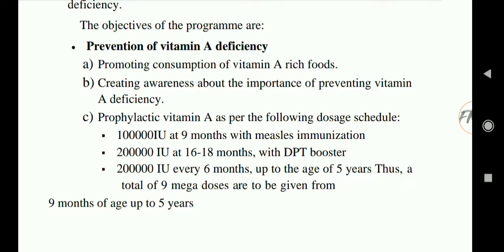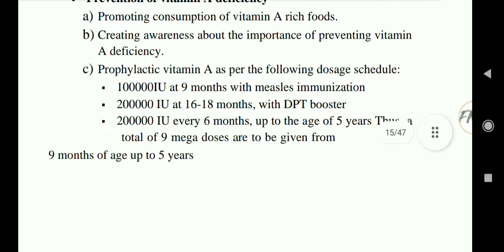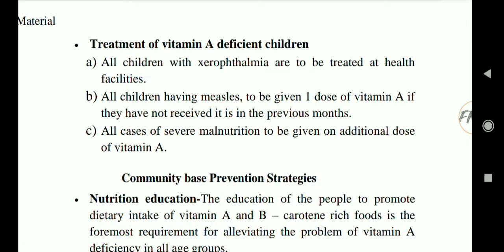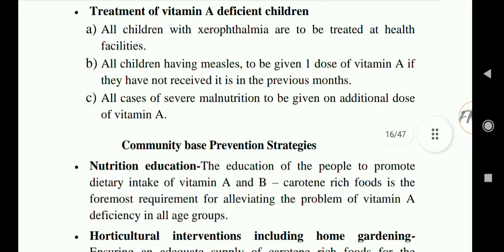The objectives of prevention of Vitamin A deficiency are: first, prevention of VAD and promotion of consumption of Vitamin A-rich food; second, creating awareness about the importance of preventing Vitamin A deficiency; third, prophylactic Vitamin A supplementation. For treatment, all children with xerophthalmia are to be treated at health facilities; all children with measles are to be given one dose of Vitamin A if not received in the previous months; and all cases of severe malnutrition are to be given one additional dose of Vitamin A.